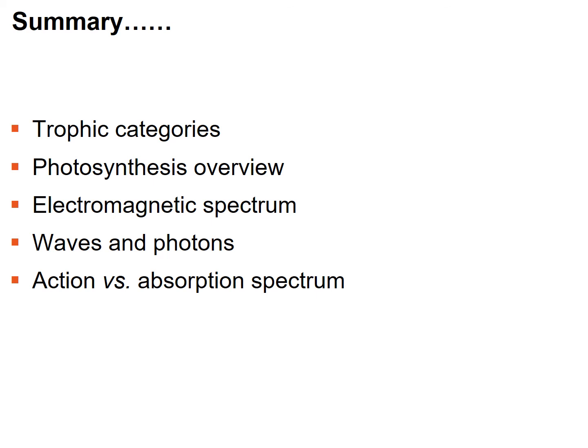In summary, this segment covered the trophic categories, an overview of photosynthesis, the electromagnetic spectrum, how light works in waves with photons, and the differences between action and absorption spectra for the various pigments in plants. We're now ready for the details of photosynthesis in the next segments.